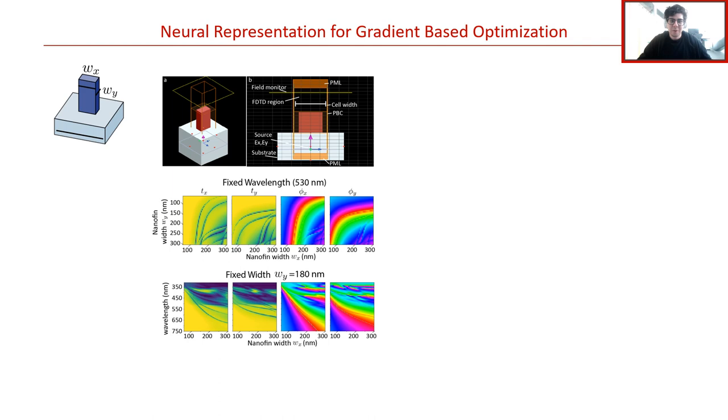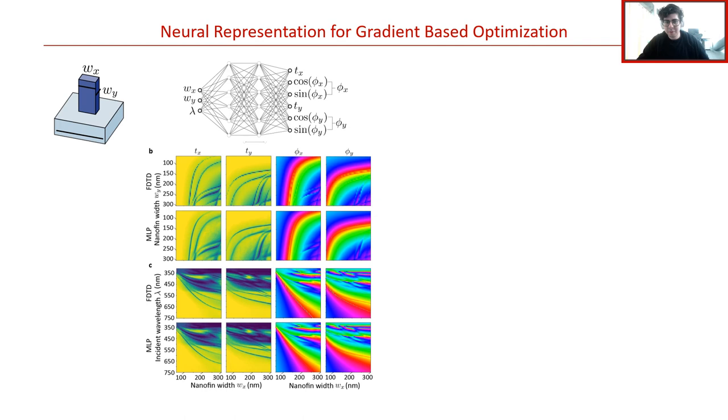We know that the shape of the nanostructure generally defines its optical response, but how do we quantify it exactly? To do this, we have to consider each possible nanostructure shape in isolation and compute its interaction with light by solving Maxwell's equations. Specifically, we use a field solver to create a dataset mapping the nanostructure shape, in this case the width of the nanofin along two directions, to its phase delay and transmittance that is imparted to two polarization states. A slice from this dataset is shown here, where each point corresponds to a different nanofin instantiation.